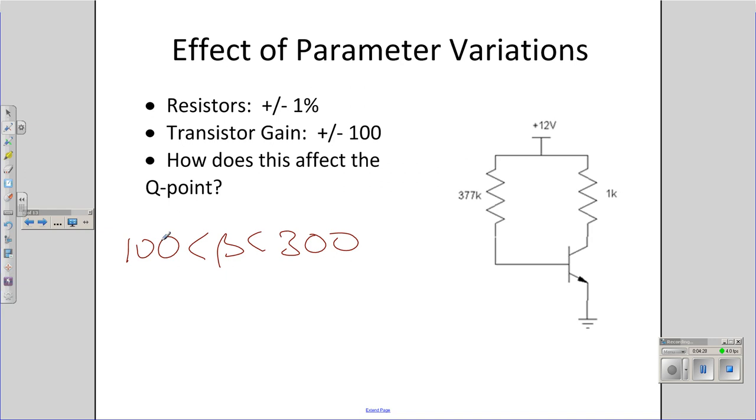In addition, my resistors are not exact. Suppose I use 1% resistors. How do I look at the variations in the Q point, taking into account the resistor's tolerance and the gain tolerance?